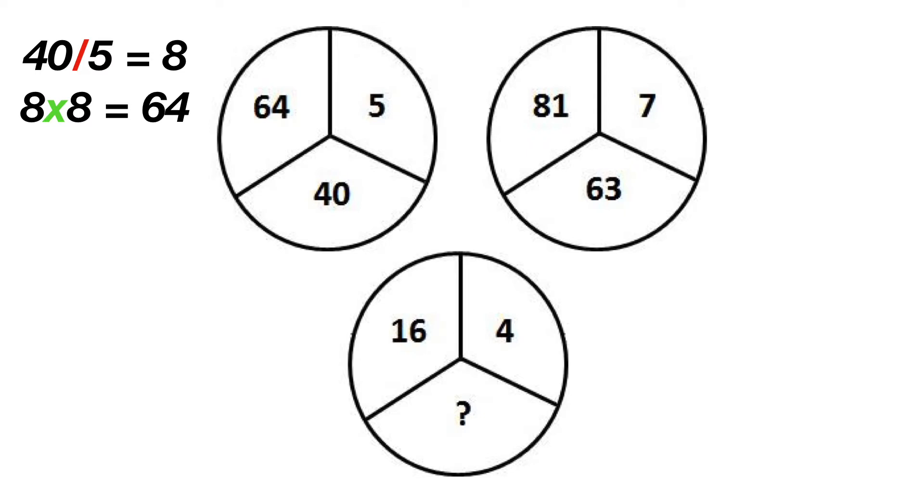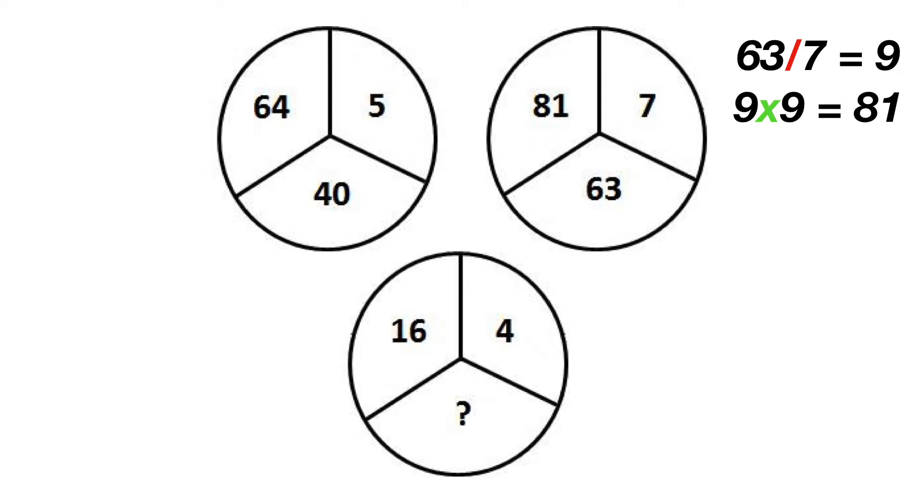This same relationship can be applied to the right circle, which is 63 divided by 7, which is 9, and 9 squared is 81.